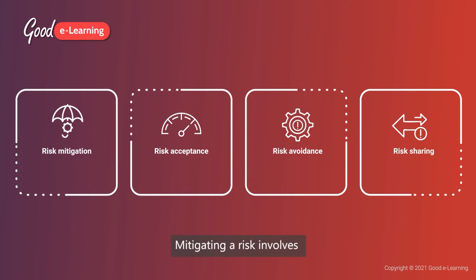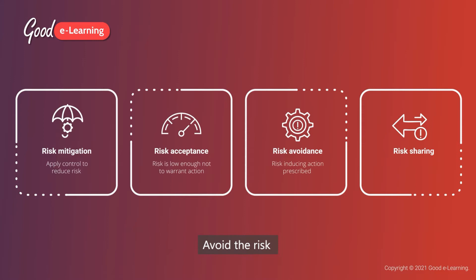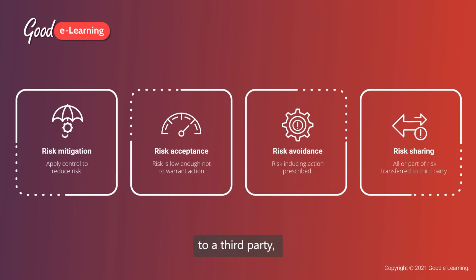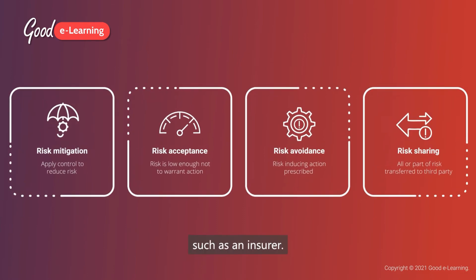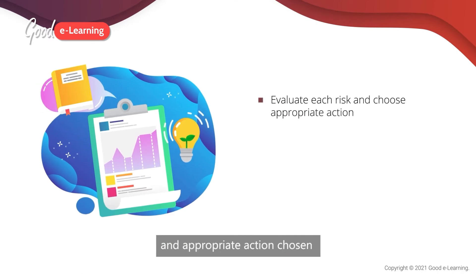Mitigating a risk involves applying a control to reduce the risk. Accepting the risk means the risk is deemed low enough that no action is required. Avoiding the risk involves ensuring that actions that would cause the risk are proscribed. Sharing the risk involves transferring it to a third party, such as an insurer.